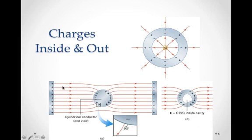Let's take a look at a conductor placed within a uniform electric field. The negative charges of the conductor — the electrons — are drawn toward the positive side of the electric field, and the exposed positive charges are left on the other side. There is some deformation of field lines around the conducting sphere, because the electric field lines must be perpendicular to the surface. But a little ways away, we see the electric field return to its normal alignment, as if the conducting sphere wasn't even there.